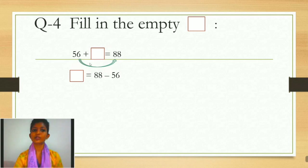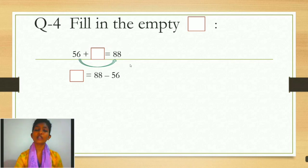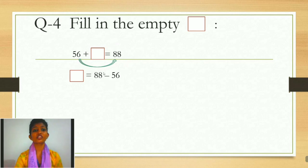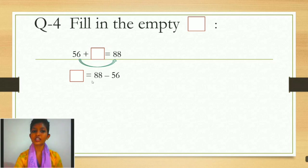Ab, yahan pe mein ne sign nahi diya. But if there is no sign given, that means it is a plus sign. Agar wahan minus sign hota, toh woh show karta. Is liye jab 56 ko doosri side leke gayi, toh 56 ka sign change hokar minus mein aa gaya. So now we have 88 minus 56.